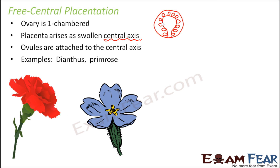Quick review of the five types: Marginal — one-chambered, ovules along the ventral margin (example: pea). Axile — multi-chambered, ovules along the central axis in each loculus (example: tomato). Parietal — one chamber, ovules on the inner wall, no septum (example: papaya). Basal — one chamber, single ovule at the base (example: sunflower). Free central — one chamber, ovules on a swollen central axis not touching the walls (example: Dianthus).